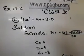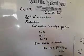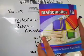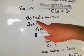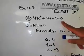Assalamu alaikum dear viewers and friends. Hope you will be fine. Today we are going to Grade 10, Class 10, Exercise number 1.2, Question number 2. The equation is: 4x² + 4x - 3 = 0. What is the solution?